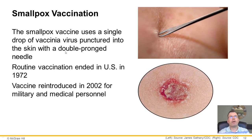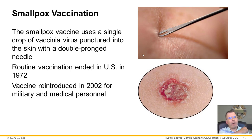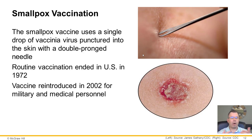The smallpox vaccine is a single drop of vaccinia virus punctured into the skin with a double-pronged needle. Those vaccinated before 1972 would have a little scar on their shoulder. If you were born in another country you may have that scar too, as many countries continued vaccinating after the US stopped in 1972.